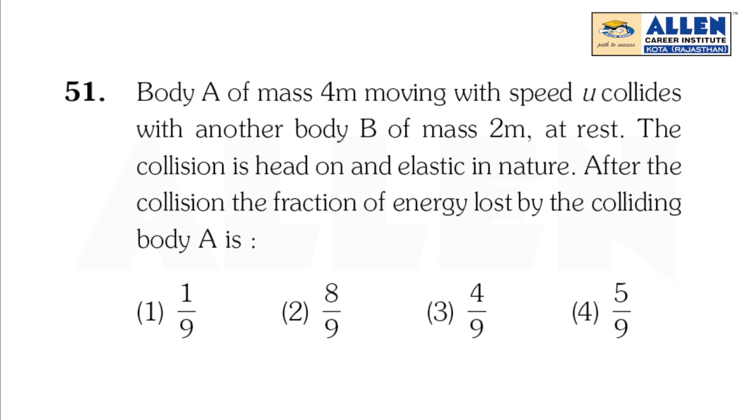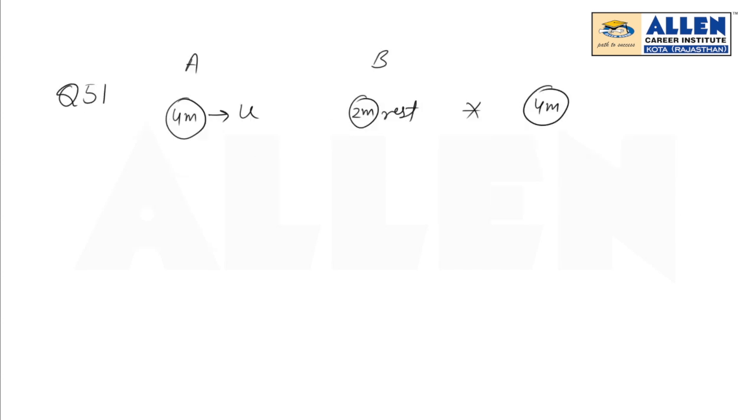After the collision, the fraction of energy lost by the colliding body A is what we need to find. Let us consider after collision, the speed of body of mass 4m is V1 and that of 2m is V2.